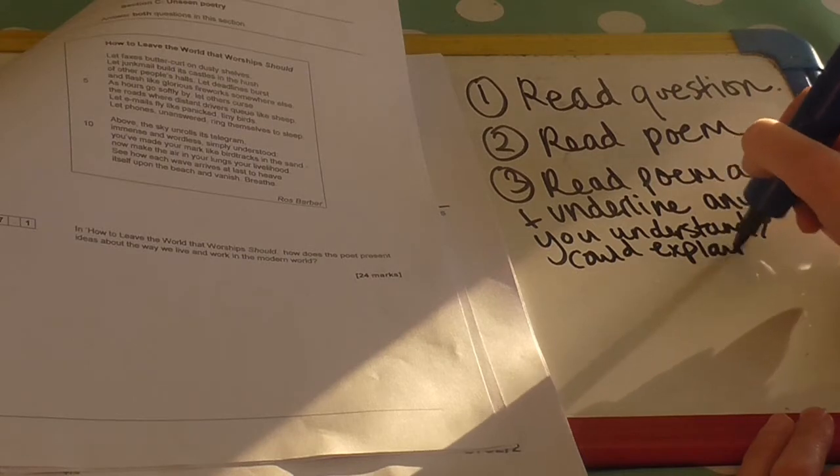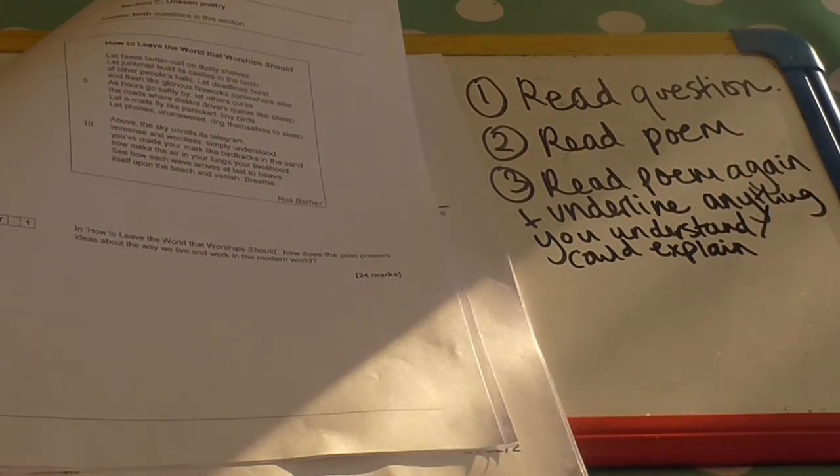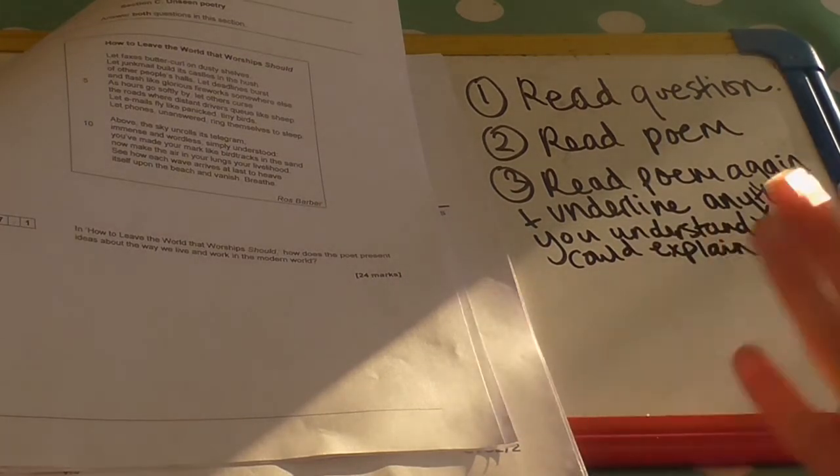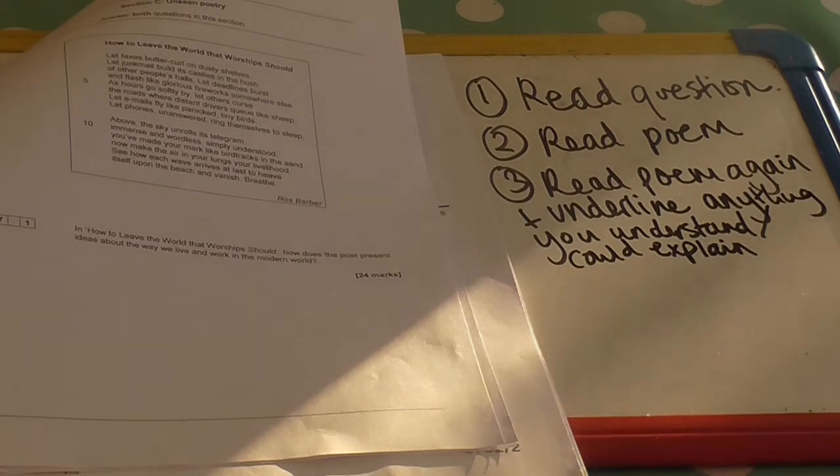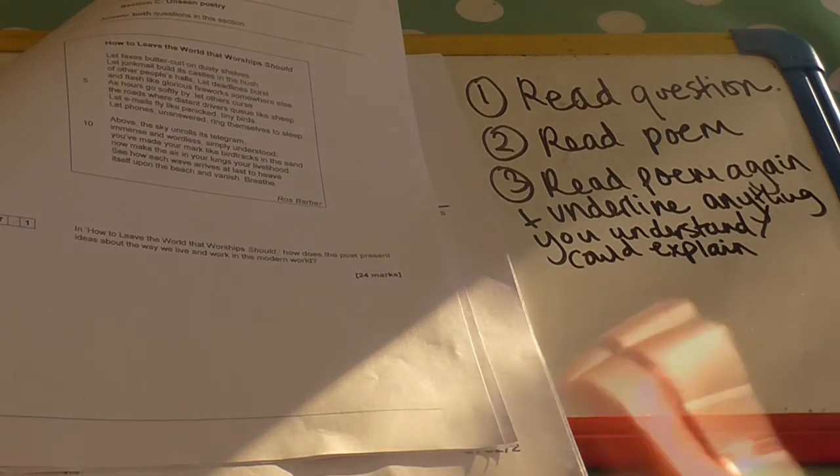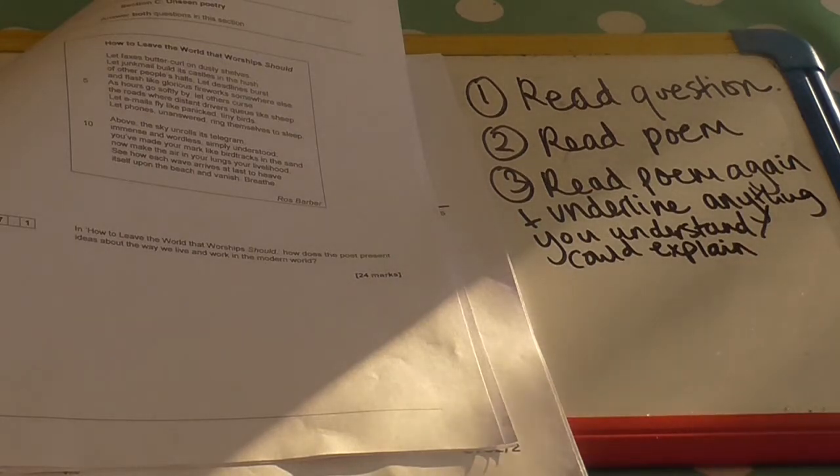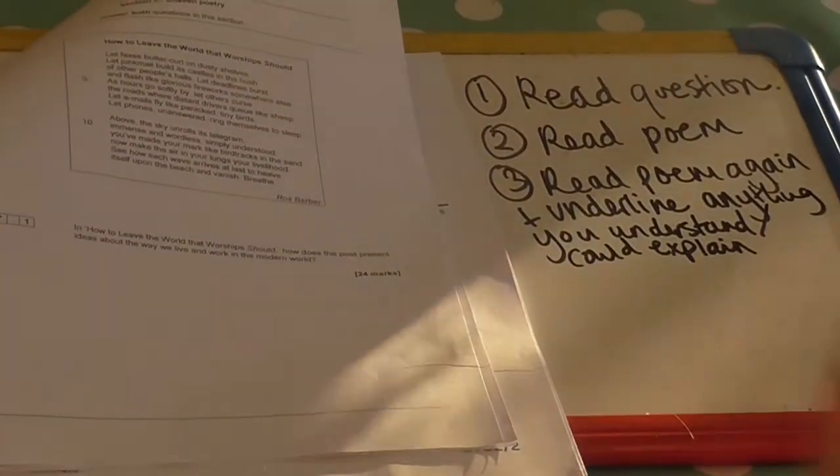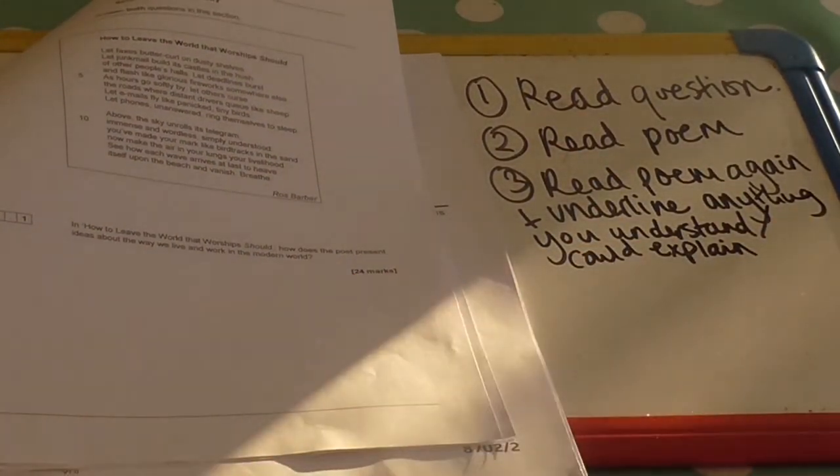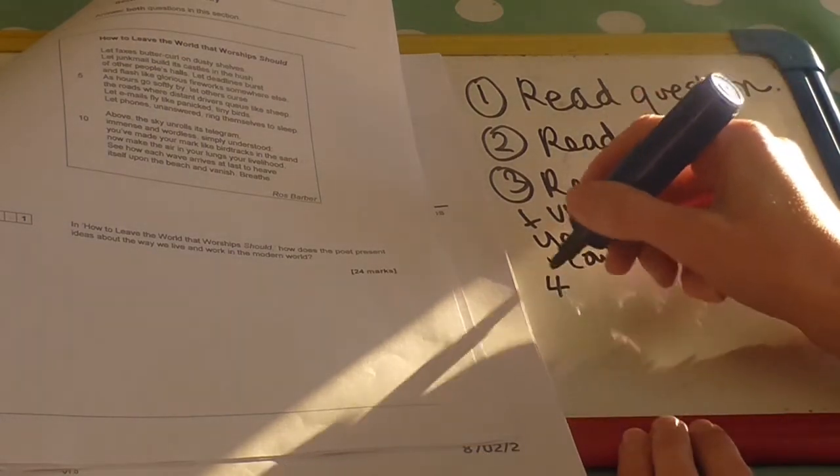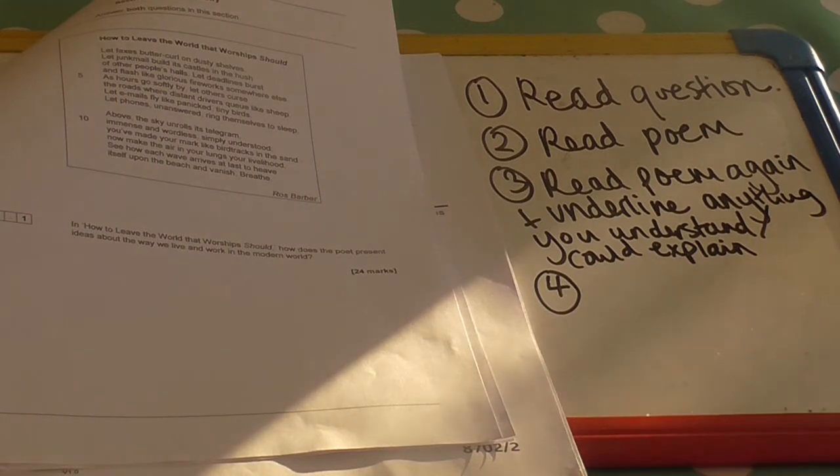But this time, try to underline anything you understand or feel you could explain. For example, there might be lines in the poem that you really don't understand at all, and that's fine, just make sure you don't go anywhere near those lines. We're looking for you, in this question, to analyze three quotes, two if you're somebody that writes loads, but three is the ideal number. And because it's worth 24 marks, we'd be looking for you to write about a side and a half. You need to pick three things from here that you think that you could unpick in detail. Read the poem again and underline anything you understand could explain, or any annotations that you think would help you to understand the poem in a bit more detail. The sort of natural things that you would do when you do see a poem for the first time.